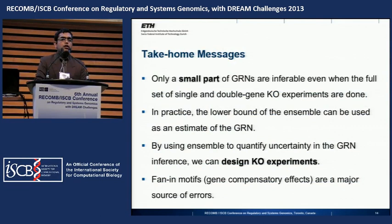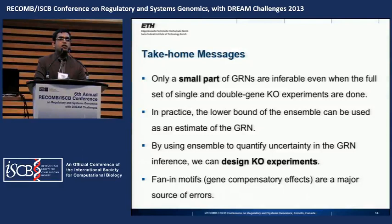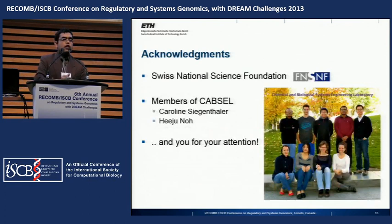Finally, the take-home messages: only a small part of gene regulatory networks is inferrable even with a complete set of single and double gene knockout experiments. We can use the lower bound as a measure for the gene regulatory network, but it is important to account for uncertainty — doing so allows us to design experiments and improve predictions. We have some issues with fanin motifs and are working to improve that. I would like to thank funding agency SNF, the members of our group, and the audience for their attention.